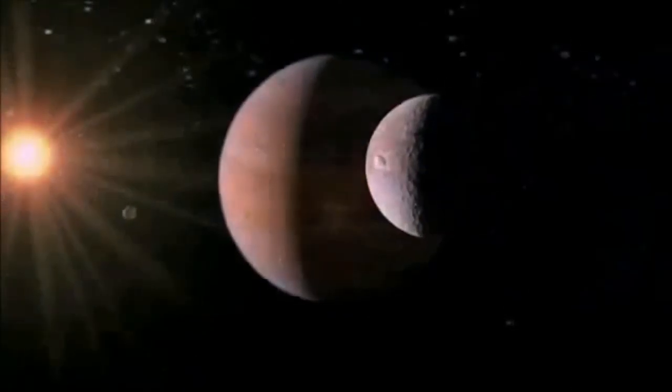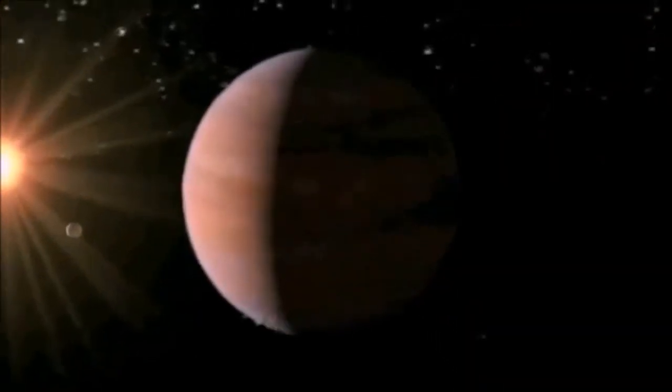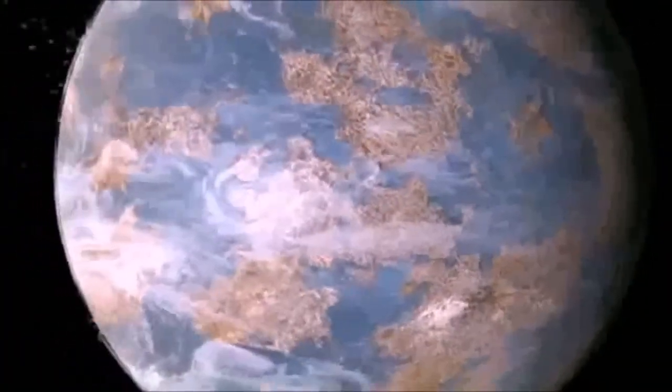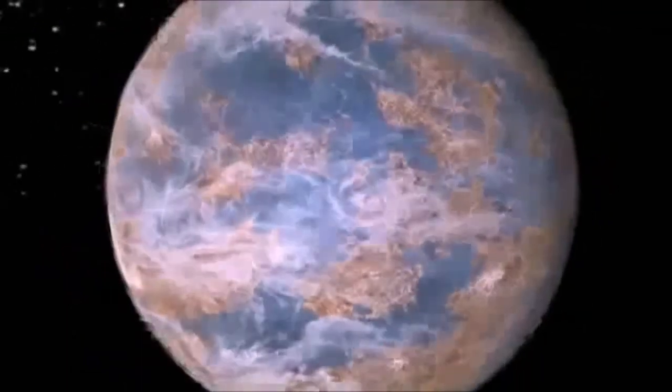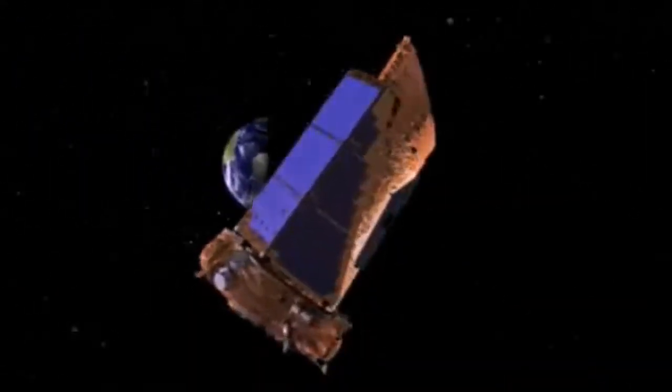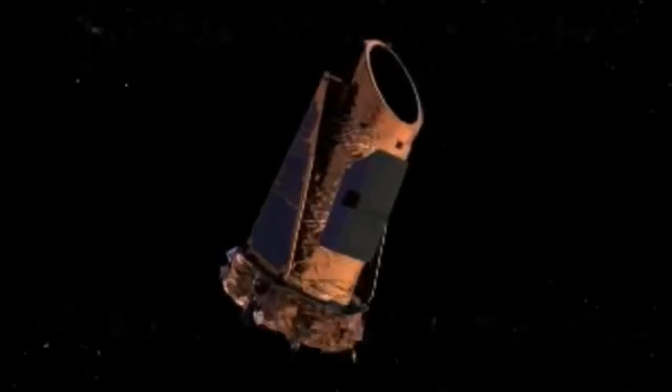A Jovian planet going around a nearby star is about a billion times fainter than its sun. A terrestrial planet of a neighboring star is a hundred times fainter still. But it now seems that comparatively inexpensive spacecraft above the Earth's atmosphere might be able to detect such other Earths.